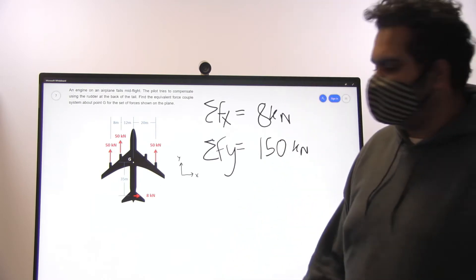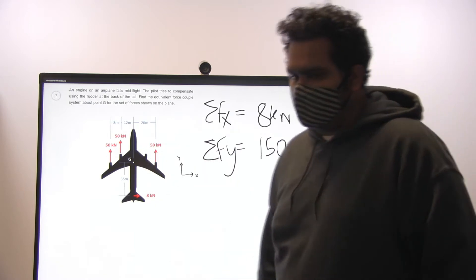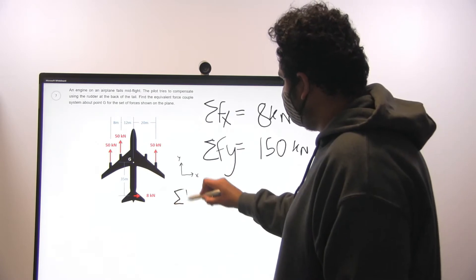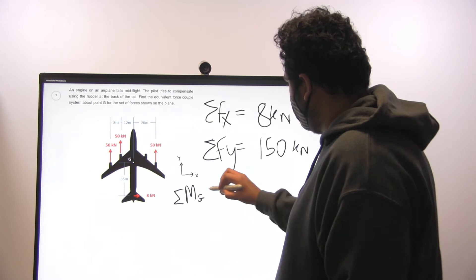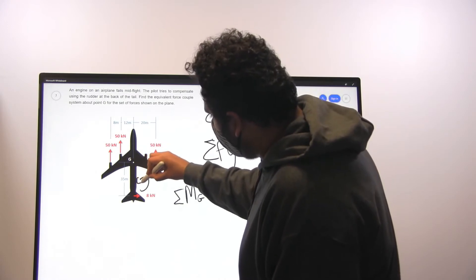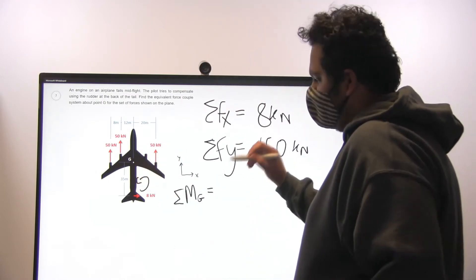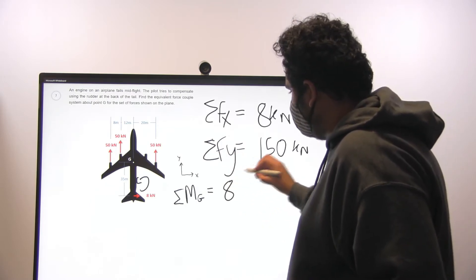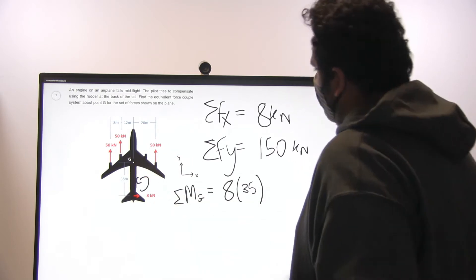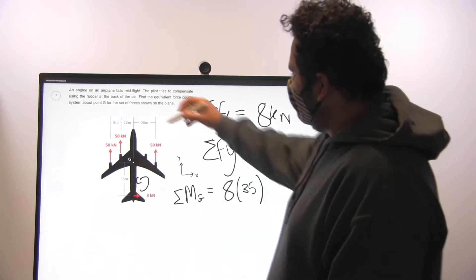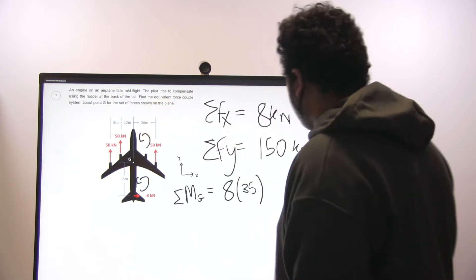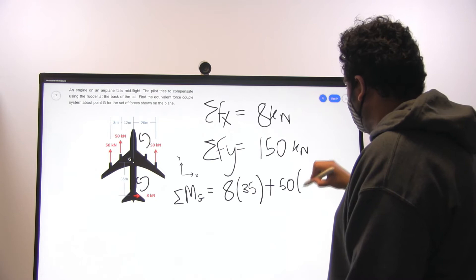Next we have to find the sum of moments at point G, which is center of mass. We can start doing the x direction force. It's in a counterclockwise direction, so it's going to be positive. 8 times 35, which is the length. Next we can do the same for this 50 kN force. It's at a 20 meter distance and it's also counterclockwise, so plus 50 times 20.